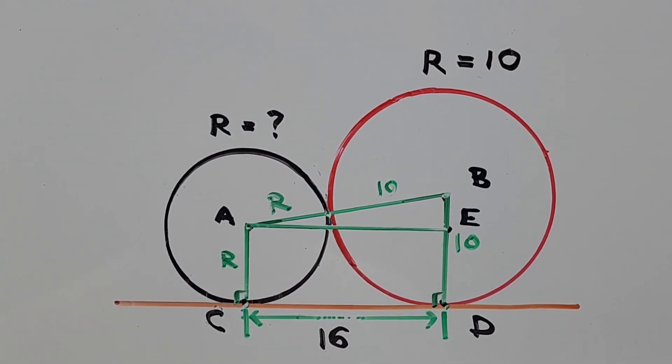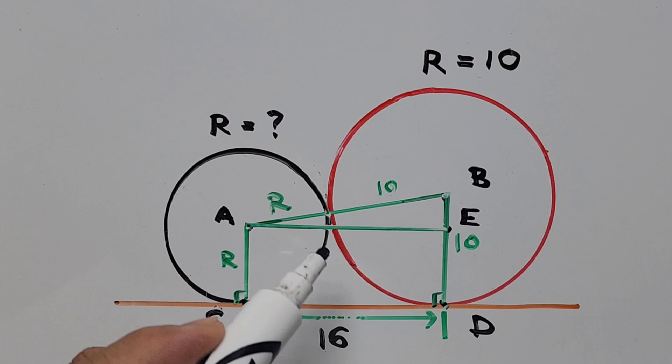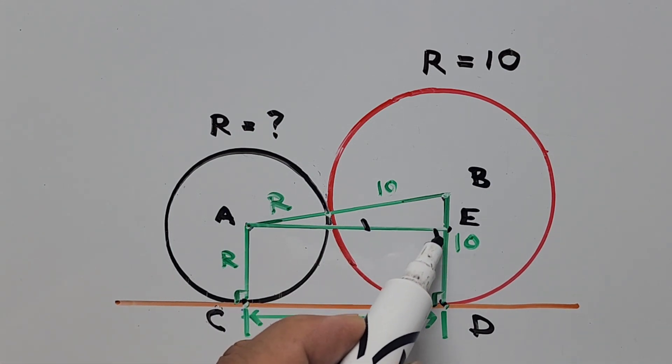From here, if you noticed, since line segment AE is parallel to CD, that means we have the same length, 16 units. So we have both lines parallel. And this means this is 90 degrees also. So these are all 90 degrees.